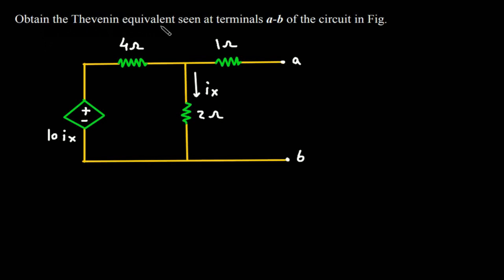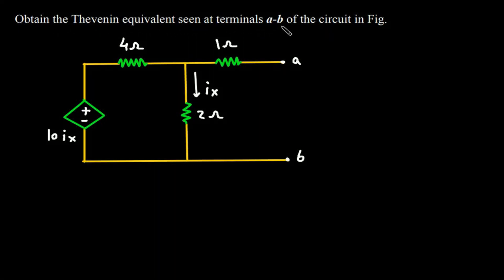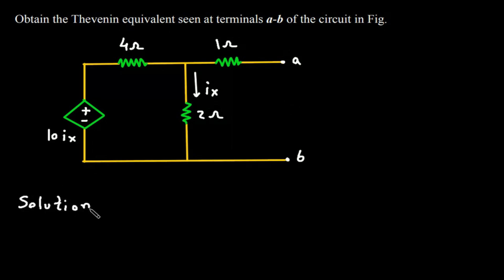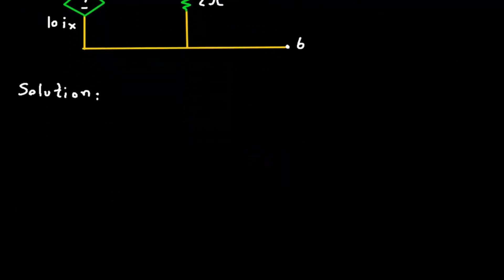Obtain the Thevenin equivalent seen at terminal AB of the circuit in figure. We have to find the Thevenin equivalent at terminal AB. To find the Thevenin equivalent we need RTH and VTH. First of all we will find RTH.